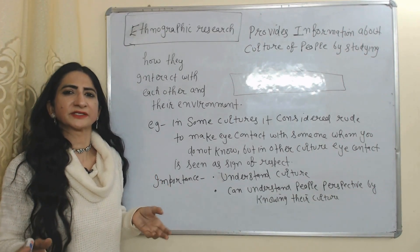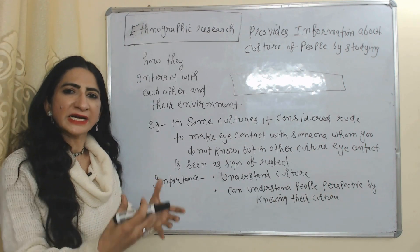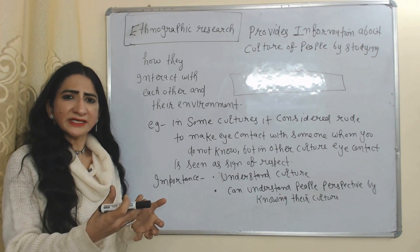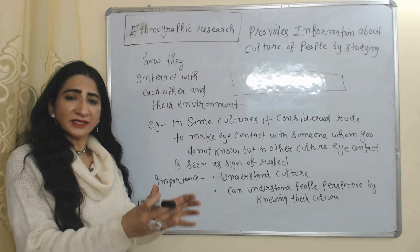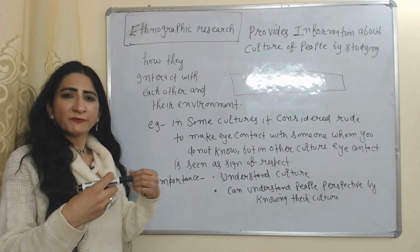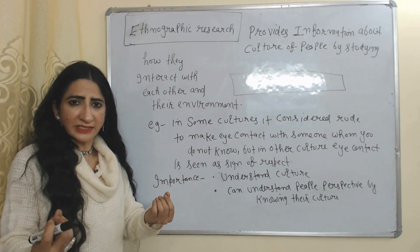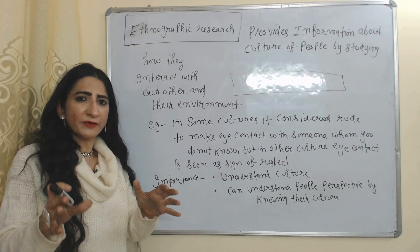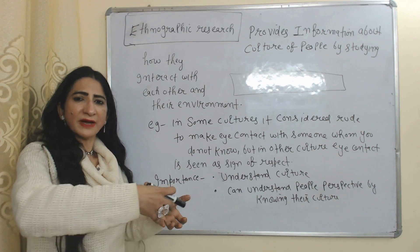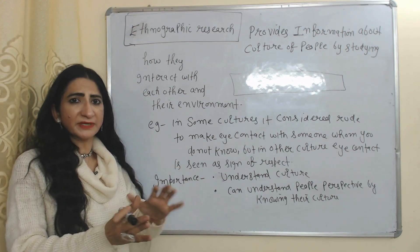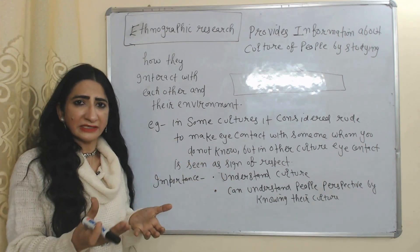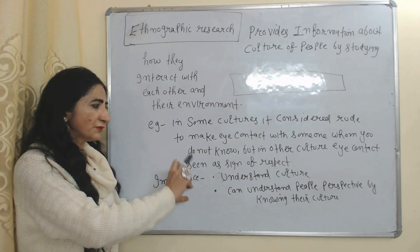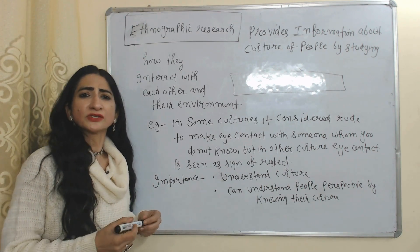Next is ethnographic research. People's behavior reflects their culture, and ethnographic research provides information about people's culture by studying how they behave, how they interact with each other, and how they interact with their environment. For example, in some cultures it is considered rude to make eye contact with someone you don't know, but in other cultures eye contact is a sign of respect. By studying people's behavior, you can learn about their culture, and most importantly, you can understand people's perspectives by understanding their culture.